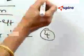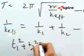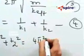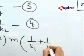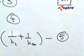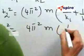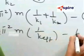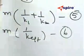Now square equations 1 and 2 and add. So T1² + T2² = 4π²M(1/K1 + 1/K2). And T² = 4π²M × (1/K_effective). From equation 4, we know 1/K_effective = 1/K1 + 1/K2. Therefore, T² = 4π²M(1/K1 + 1/K2).